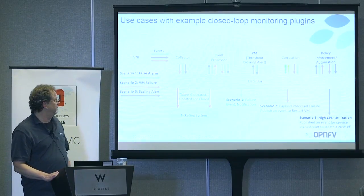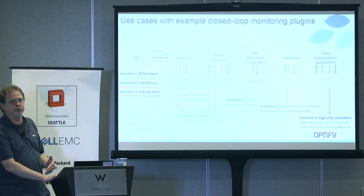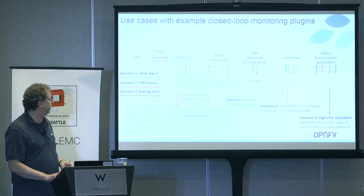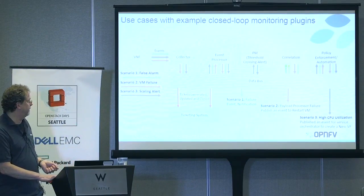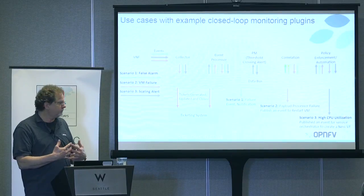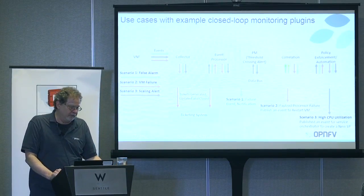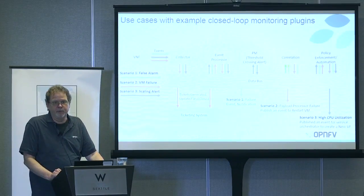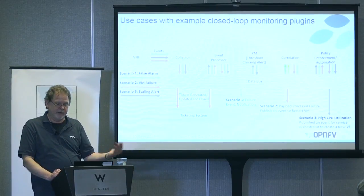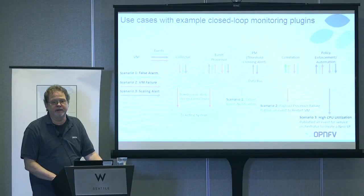The correlation engine decides if it's a false alarm or a real one. A response may be: there really was a failure — send a notification, create a trouble ticket, etc. Similarly for VM failure, various plugins of the system cooperate in taking the appropriate response. In many cases there won't be a response — we've collected data and we're going to use it to optimize things, such as workload placement. A lot of this data will just go in and be used by other functions inside the overall ECOMP framework.